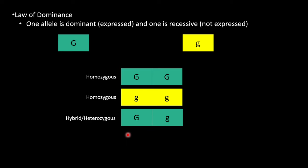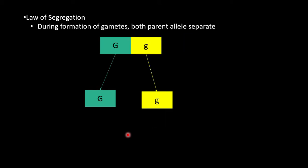The law of dominance states that one allele is dominant, expressed, and one is recessive, not expressed. In this example, the capital G is a dominant trait and the lowercase g is recessive. If an organism has two dominant alleles, the dominant trait will be seen. If an organism has two recessive alleles, the recessive trait will be expressed. But if there's a hybrid or heterozygote, the dominant gene will mask the recessive and its trait will be expressed.